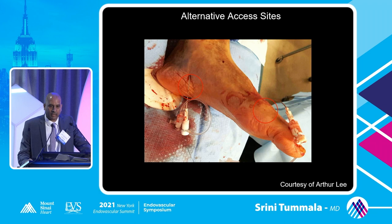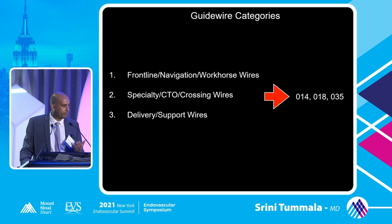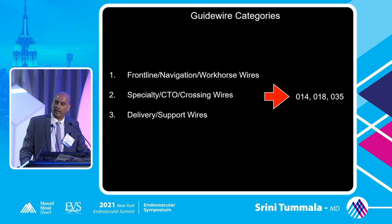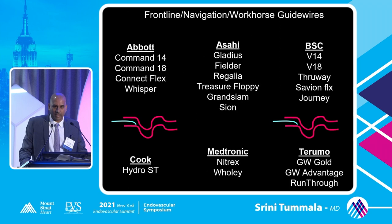What about guide wires? Fellows always ask which guide wire to use and try to remember names. Rather than getting hung up in names, every company publishes guide wires in three categories: frontline navigation or workhorse wires to get you someplace; specialty or CTO wires to cross high-grade stenosis or CTOs; and delivery and support wires to help deliver therapy or a device like atherectomy. Experience, mentors, and training will determine which ones you're comfortable using.